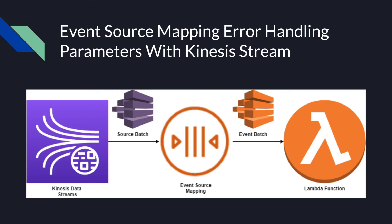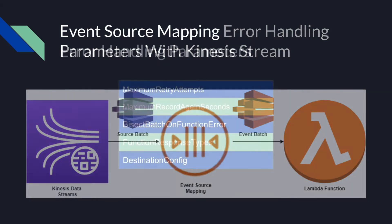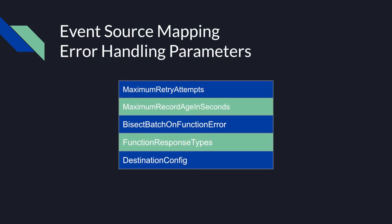Hello my friends. In the third part of the Kinesis with Lambda tutorial, we are going to learn about the different event source mapping parameters for error handling. The event source mapping will read batches of records from the stream and invoke your Lambda function for you. It will also handle the polling, checkpointing, and error handling complexities, which will allow you to focus on your business logic. In the next slides I'll go over each parameter and explain how they work.